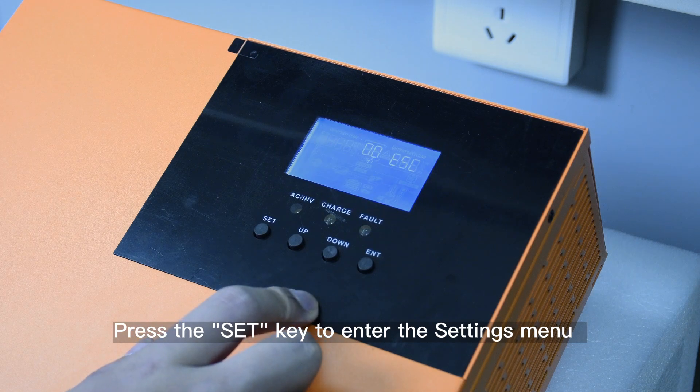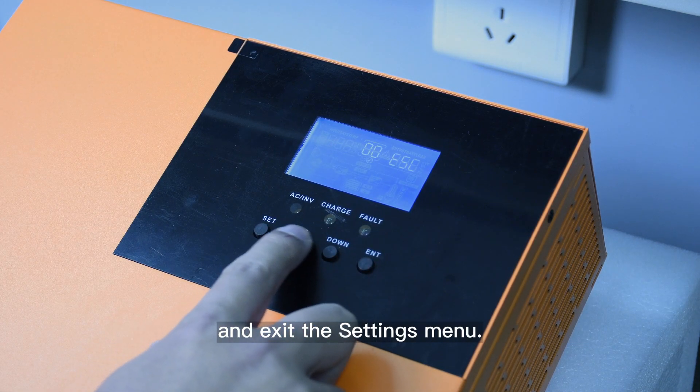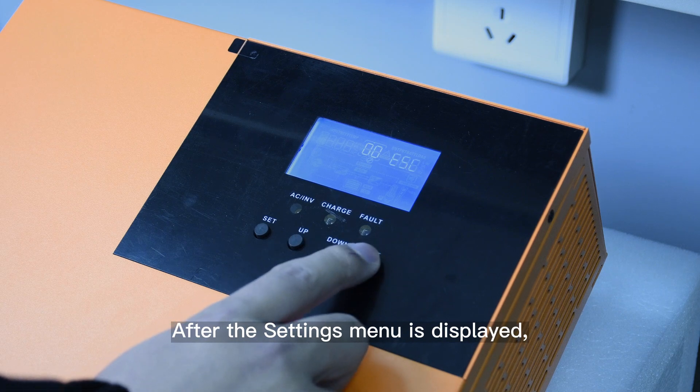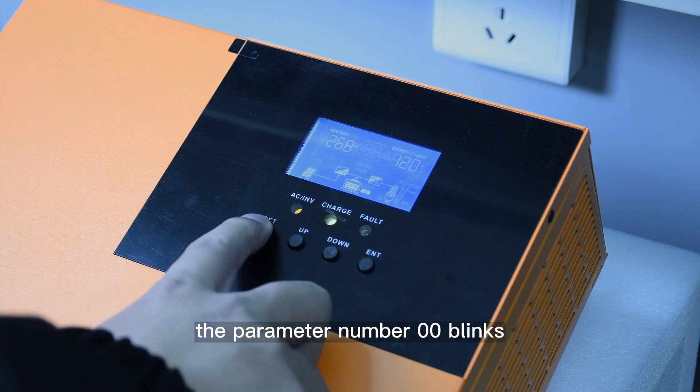Press the SET key to enter the settings menu and exit the settings menu. After the settings menu is displayed, the parameter number 00 blinks.